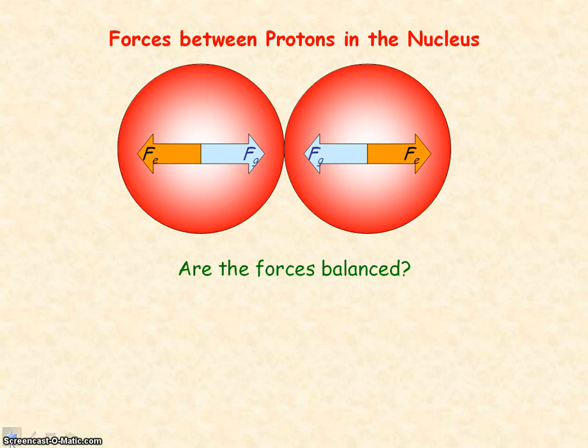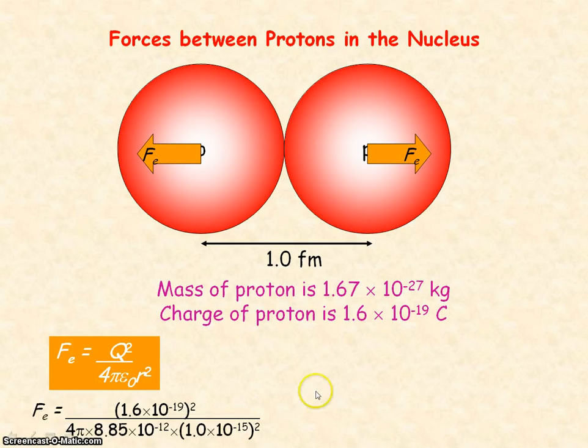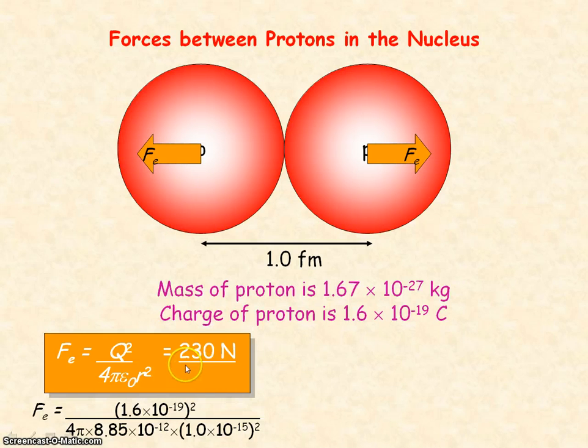Now are these forces balanced? We'll use this data to first find the electrostatic force. So we're considering the two protons are one femtometer apart, and a femto is 10 to the minus 15. We'll use Coulomb's law to determine the electrostatic force. We substitute in the values, we get an electrostatic force of 230 newtons, which is a massive force between two very small protons.